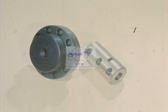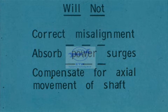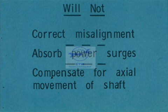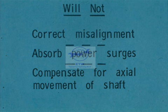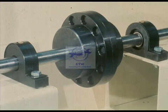We'll show you more on the installation procedures for both of these couplings in the next segment of this course. Remember, both the split sleeve and the flange couplings are of the rigid class. They cannot be used to correct misalignment. They will not absorb power surges or shock, and they will not compensate for axial movement of the shaft. On the other hand, neither of these rigid couplings requires any kind of lubrication. They are simply used to connect two shafts solidly, making the shafts, in effect, one shaft.